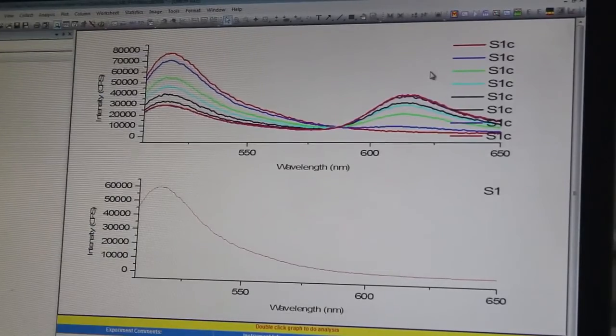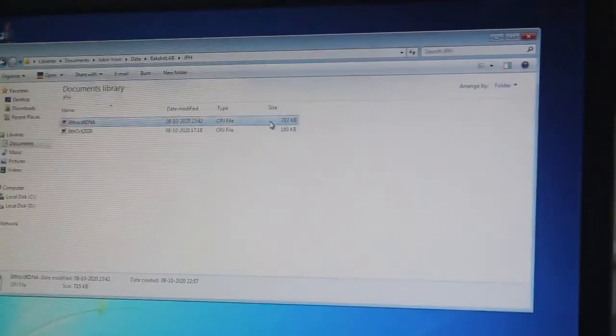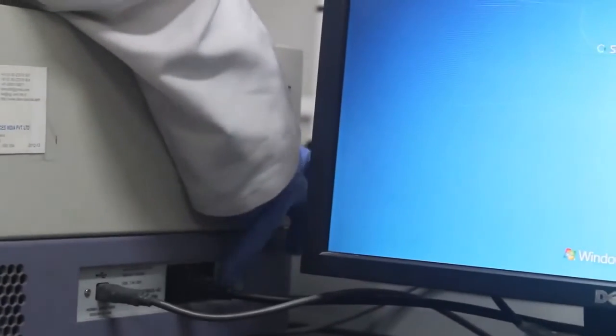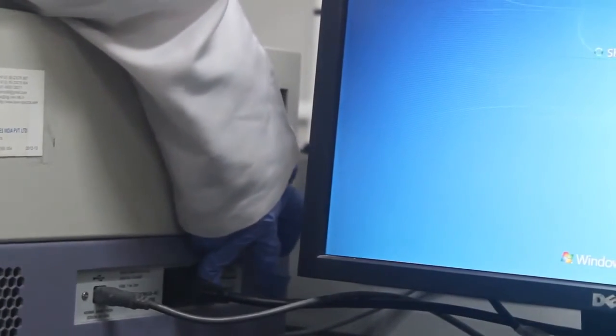We are going to switch off the instrument. First you turn off the software. After the software is turned off, you turn off the computer, and then you turn off the main switch of the spectrofluorimeter.